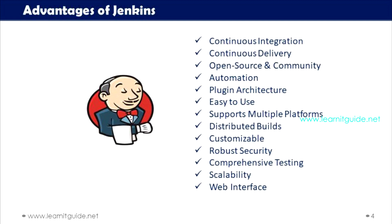And continuous delivery — in addition to continuous integration, Jenkins can be extended to support continuous delivery, that is CD. CD involves automating the deployment of code changes to various environments such as development, staging, and production in a consistent and reliable manner. The next advantage is open source and community. Jenkins is an open source project with a strong community of contributors and users that continuously develops and maintains plugins and extensions, offering support through forums, documentation, and third-party resources. Another advantage of Jenkins is automation. Jenkins enables the automation of repetitive and time-consuming tasks in the software development process. It allows developers to define and execute jobs, which can include building applications, running tests, and deploying to different environments, all without manual intervention.